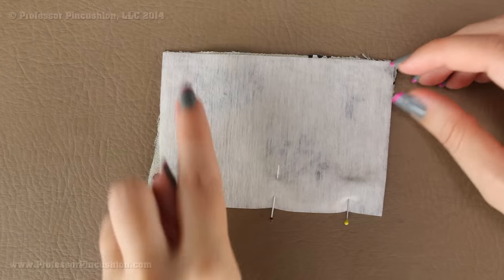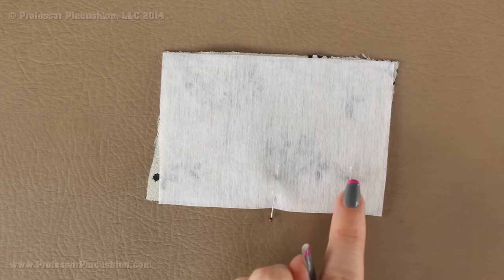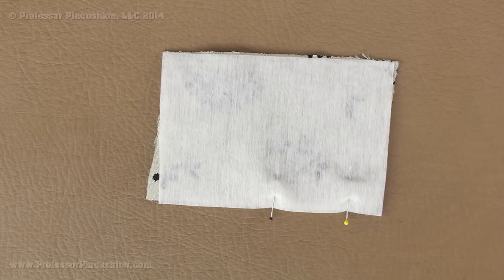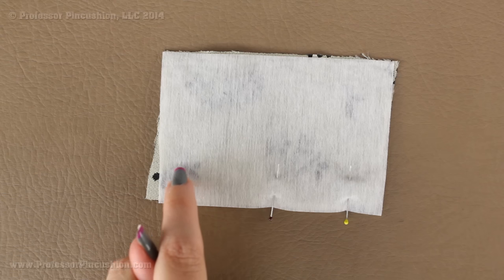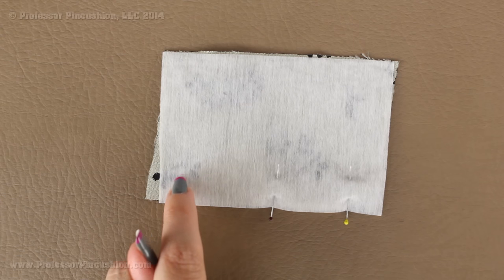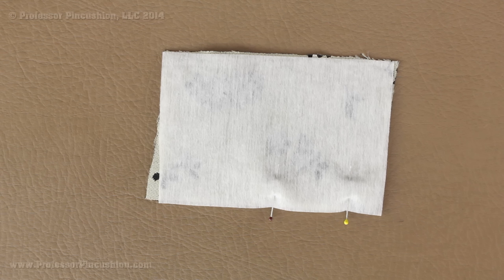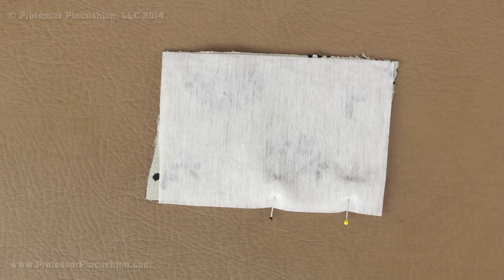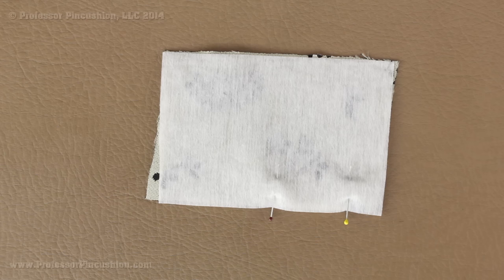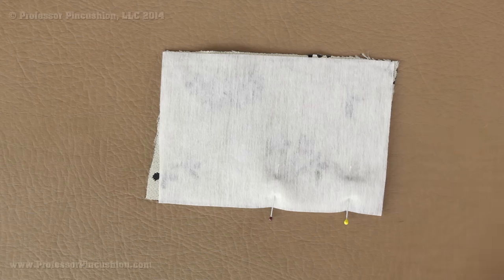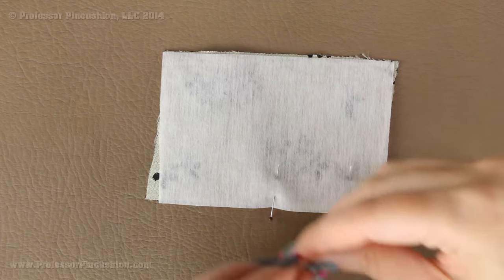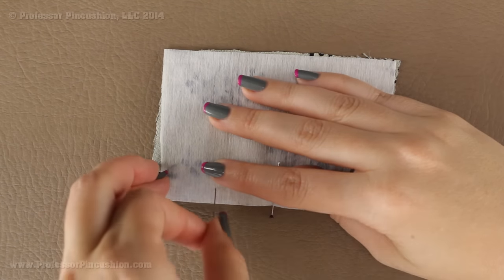Now we're just going to be doing a basting stitch around the whole thing and you can either do the basting stitch at the seam allowance of your piece so if my seam allowance is five-eighths of an inch I can do five-eighths of an inch or you can make it a little bit less than that. So maybe instead of if I have a five-eighths seam allowance I do a half inch. That way I don't have to worry about my basting stitches showing after the whole thing is completed because they're going to be hidden within the seam allowance. So I'm going to go ahead, finish pinning this and then we'll take it to the machine.